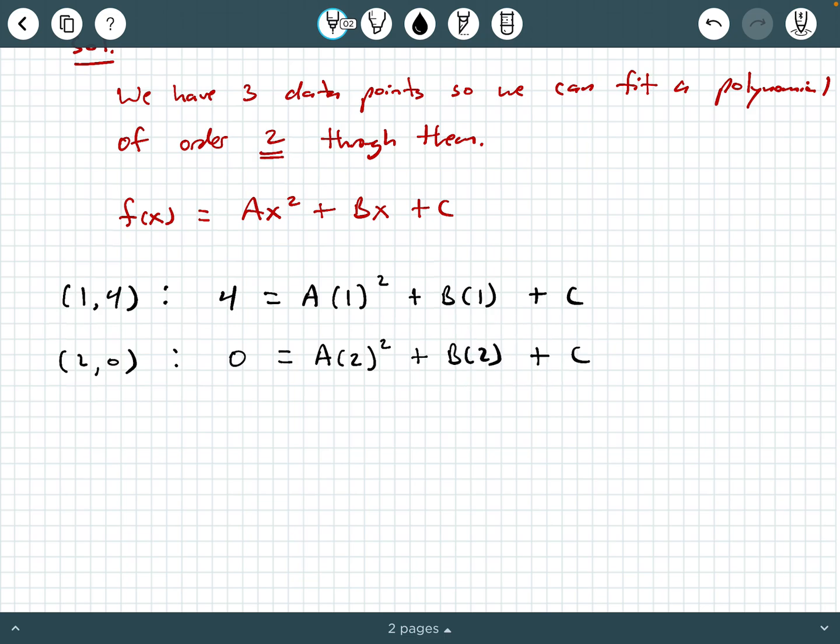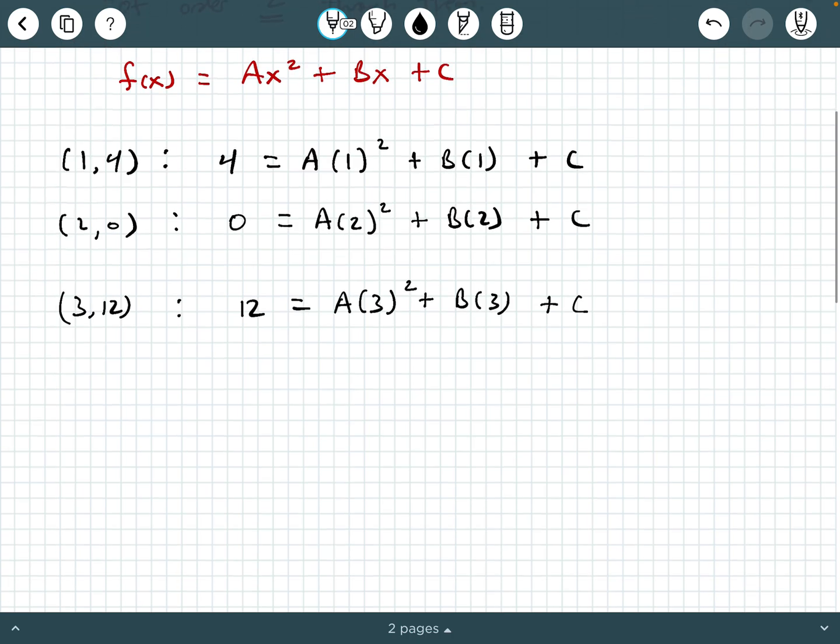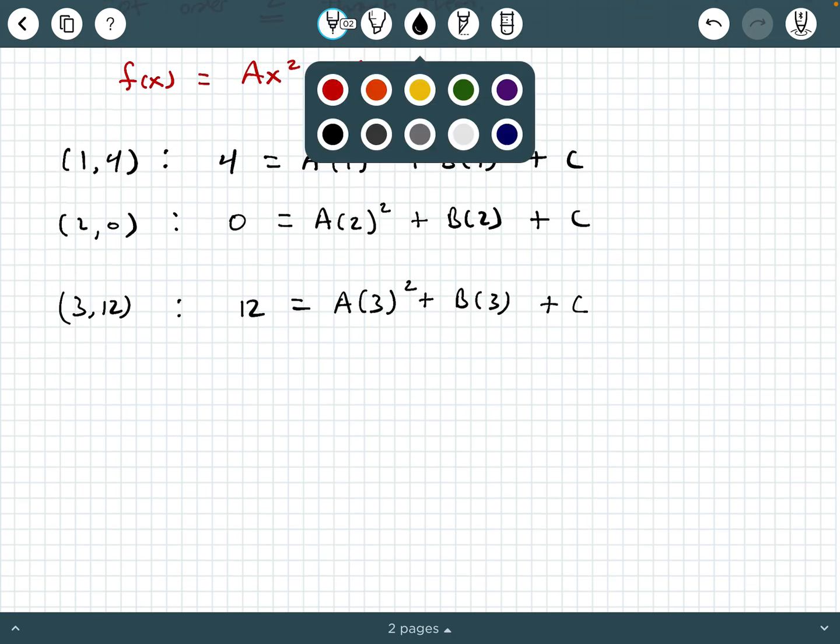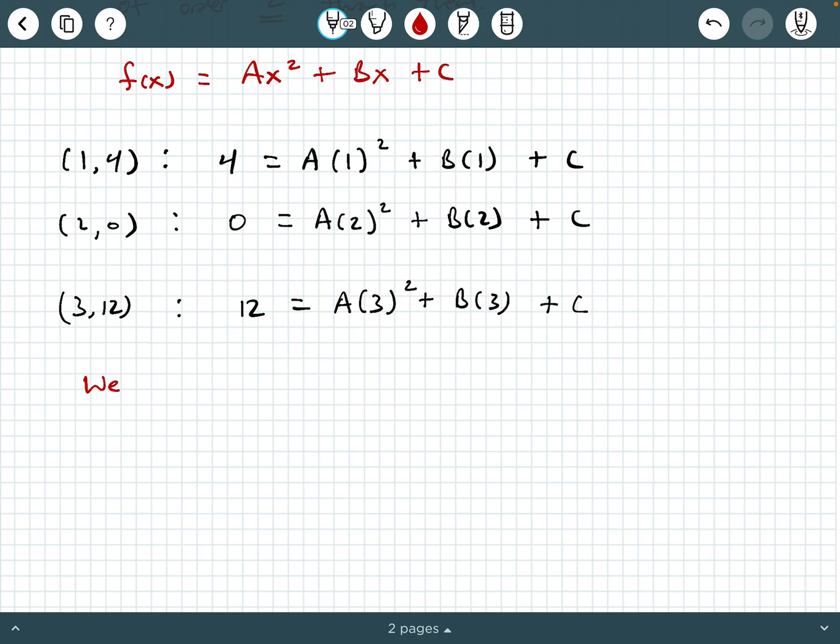And then our last data point was (3,12). So we say 12 equals A times 3 squared plus B times 3 plus C. Now these are our three equations with three unknowns. So here we have three equations with three unknowns, A, B, and C.